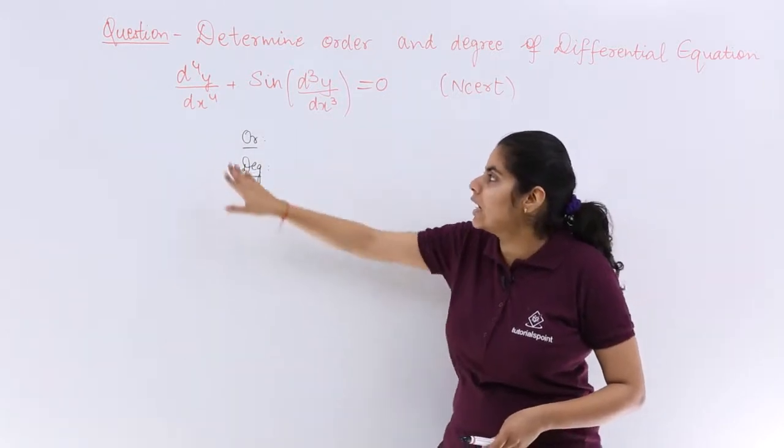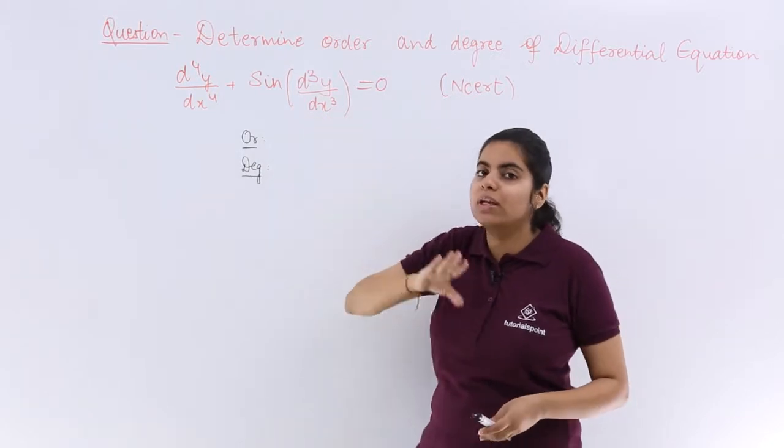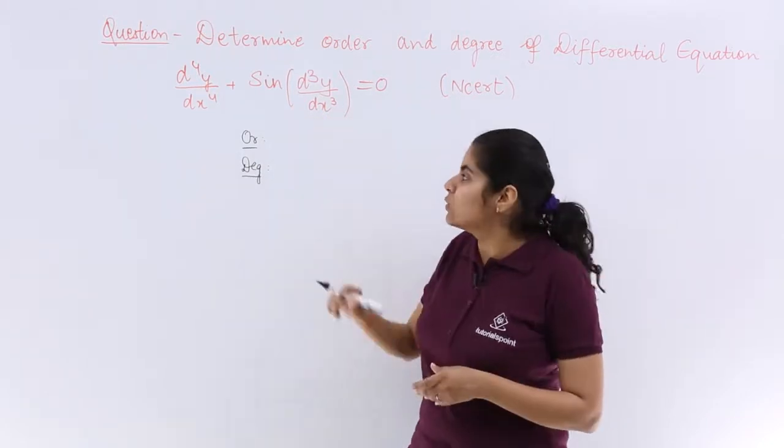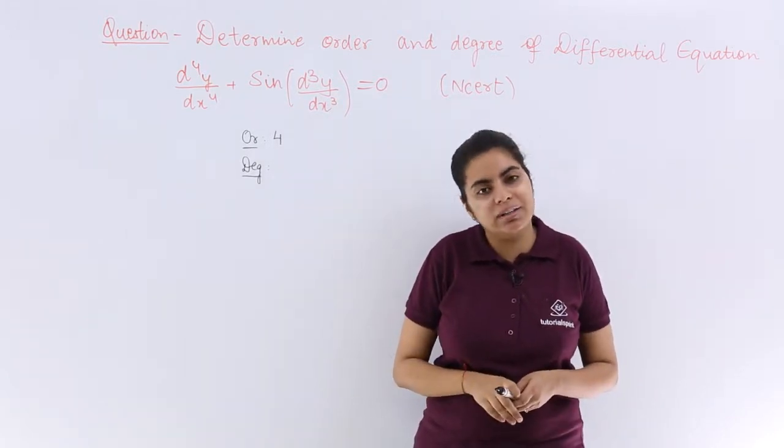Participating orders are order 4 for this part and order 3. Out of 4 and 3, which is greater? 4. So the highest order is 4. So the differential equation has the given order as 4.